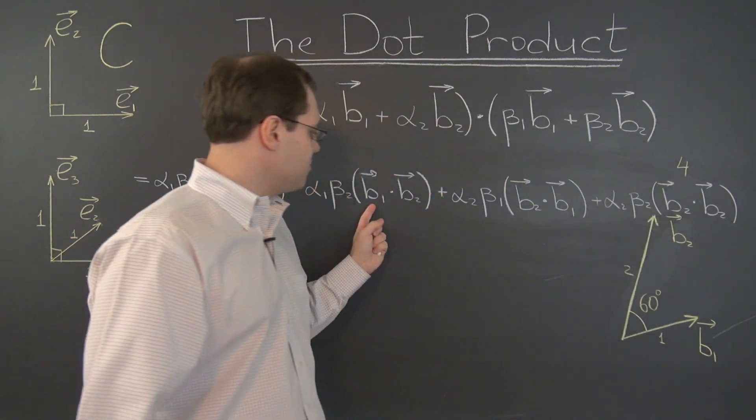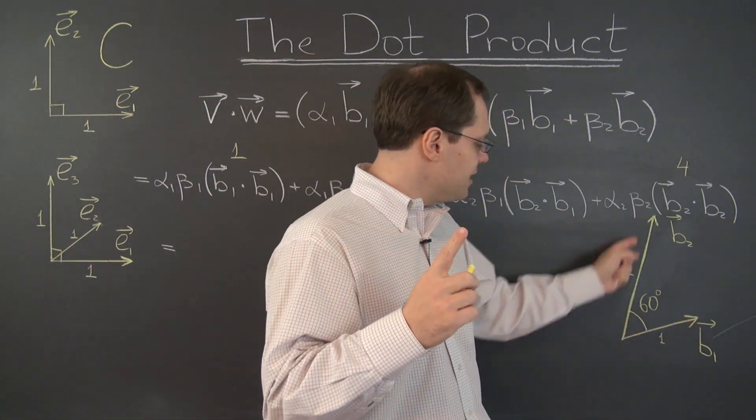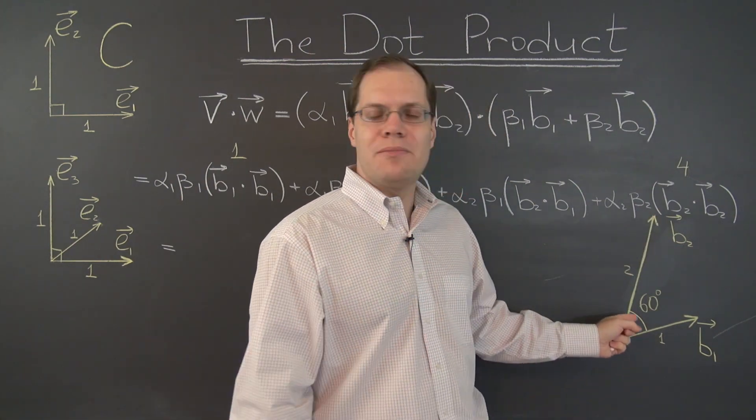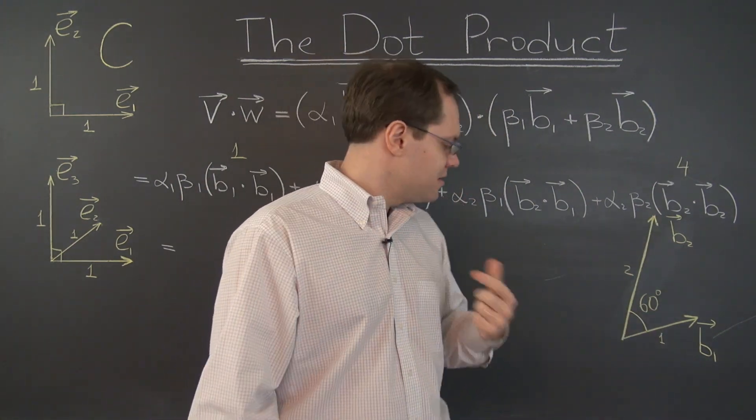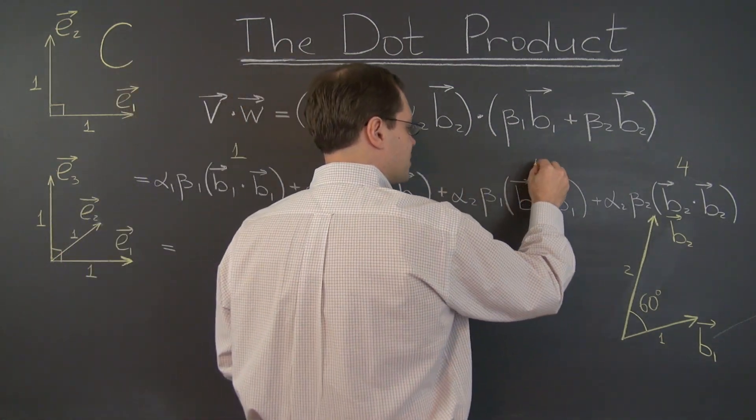So we're doing great. And now b1 dotted with b2 is the length of b1 times the length of b2, which is 2, multiplied by the cosine of the angle between them. That's 1 half. So this number is 1. And this number is 1.